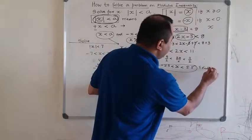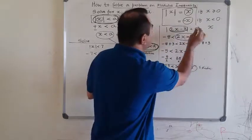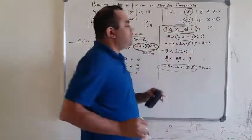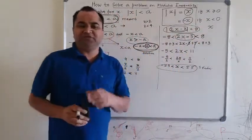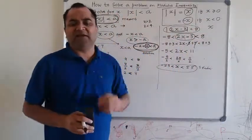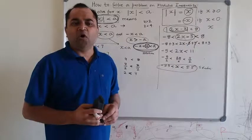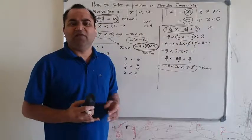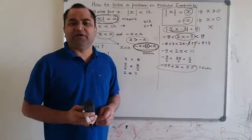So this is the solution for the given modulus inequality: mod of 2x minus 3 is less than 8. Hope you found this video useful. Thank you for watching.